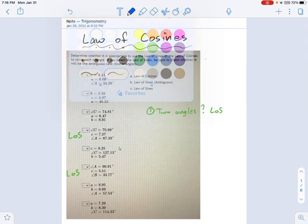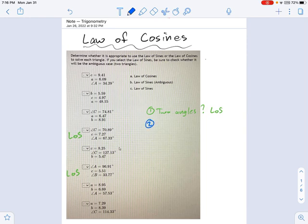Next question I'm going to ask. Do we have any, do we have no matching pairs? So no matched pairs of angles and sides. And if you have no matched pairs, that's going to be law of cosines.